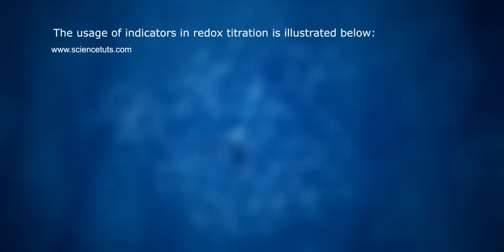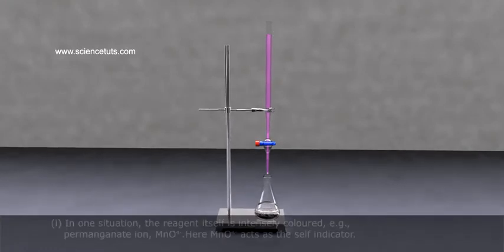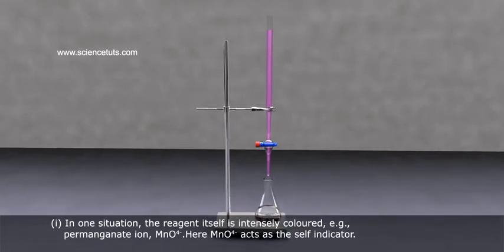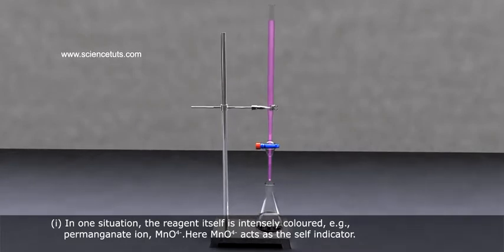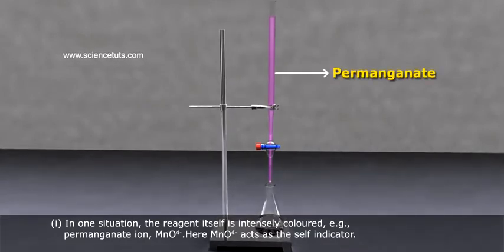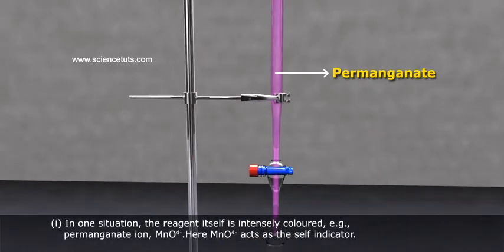The usage of indicators in redox titration is illustrated below. First, in one situation, the reagent itself is intensely colored. For example, permanganate ion MnO4-. Here, MnO4- acts as the self-indicator.